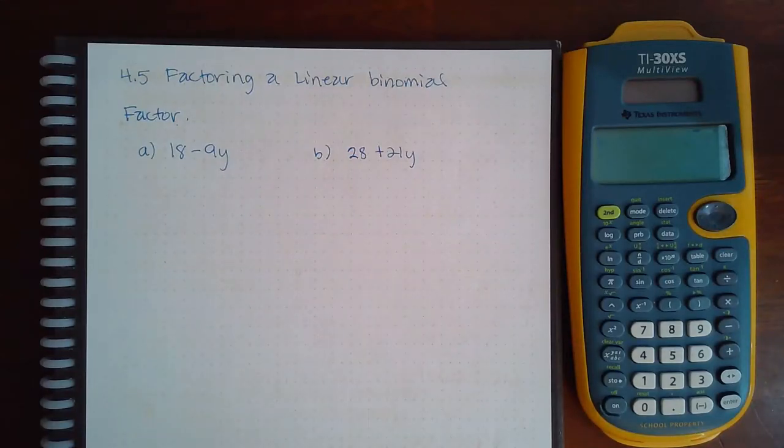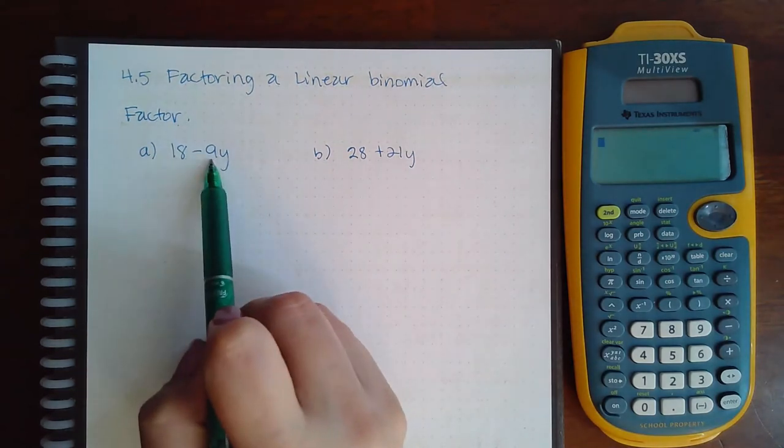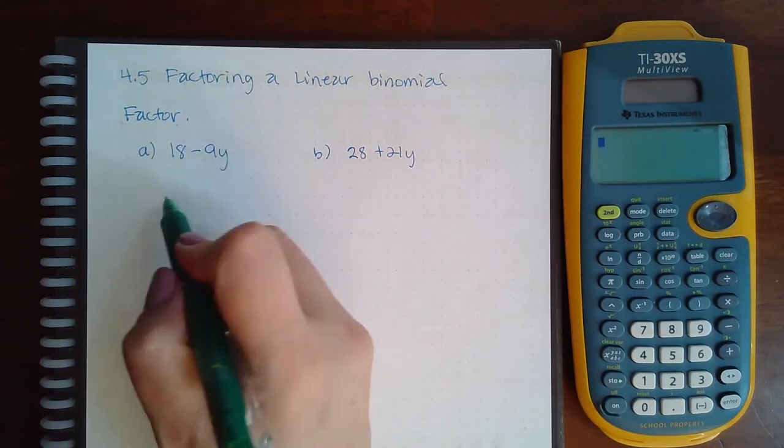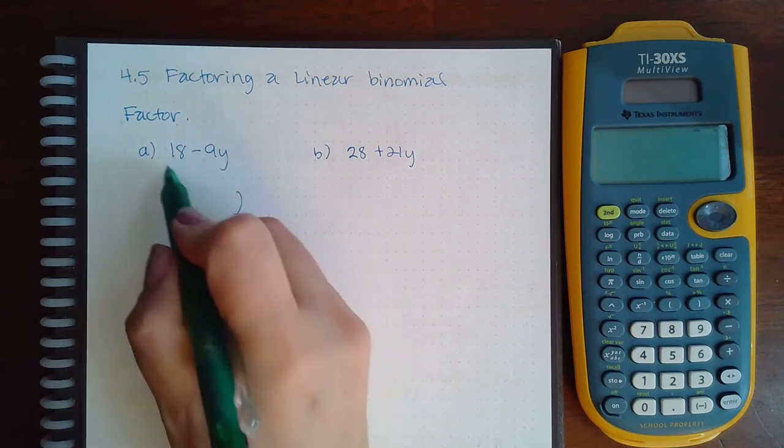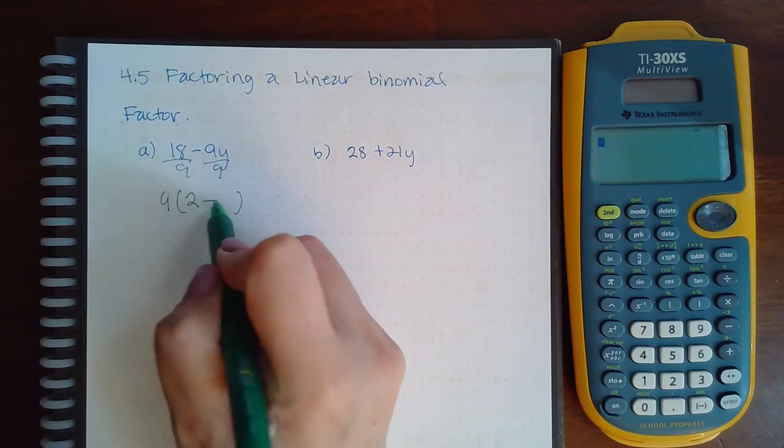So here I have 4.5 factoring a linear binomial. We're going to factor this. I have a common factor, a GCF of 9. So if I factor that 9 out, what I'm left with is 9 times 2 minus y.